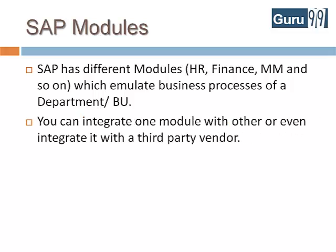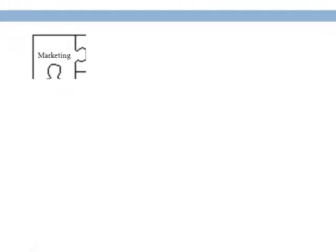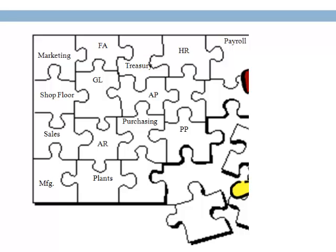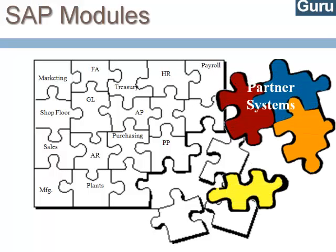You can integrate one module with another, or even third-party interfaces. Depending upon your organization, you can have just one module, a few, or all the modules of SAP implemented. You can also have integration with third-party systems, and it is even possible to integrate modules from different ERP vendors.